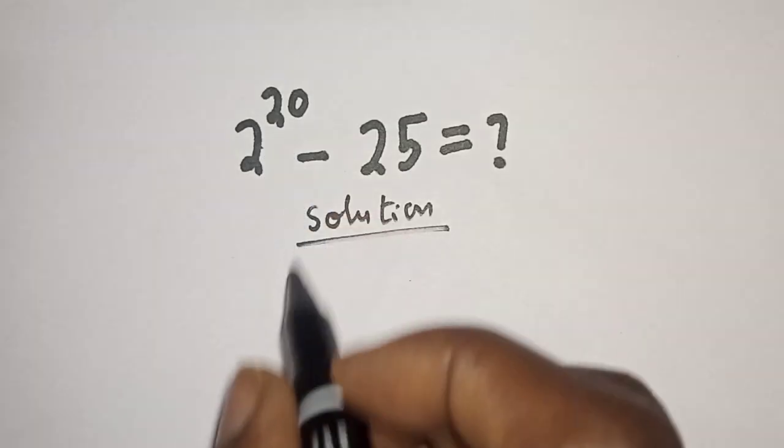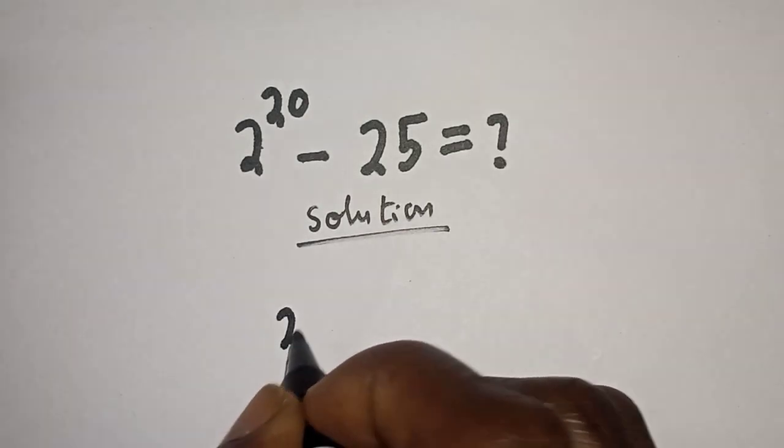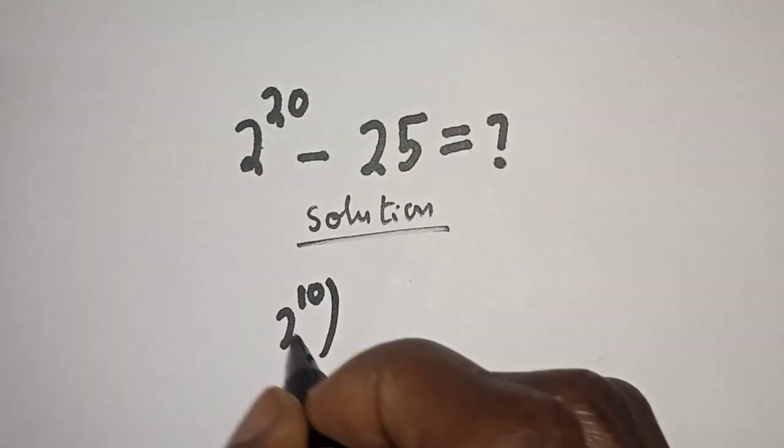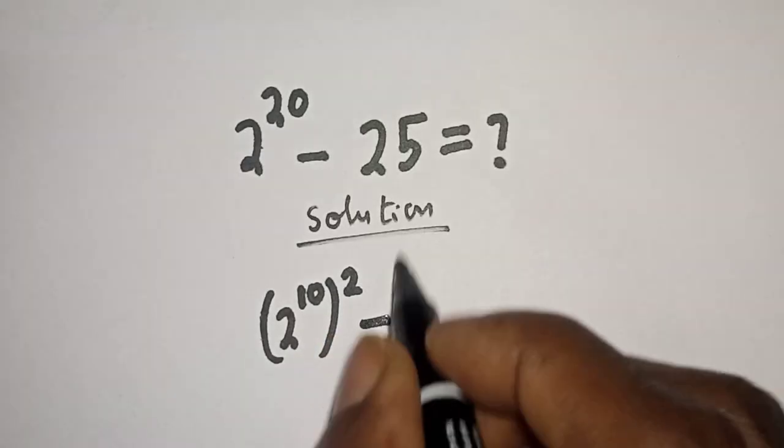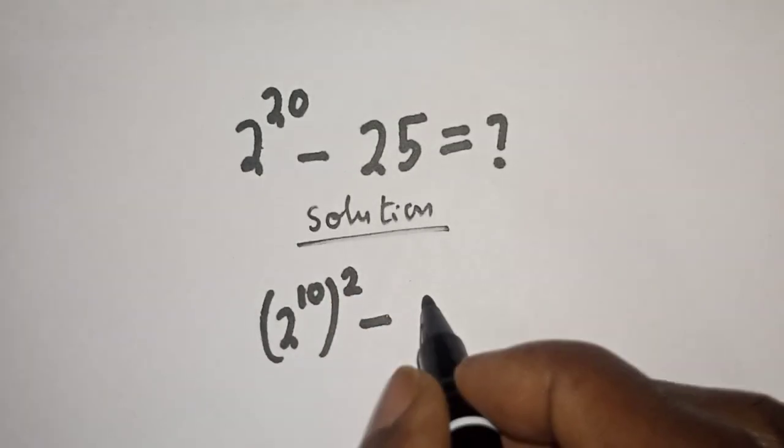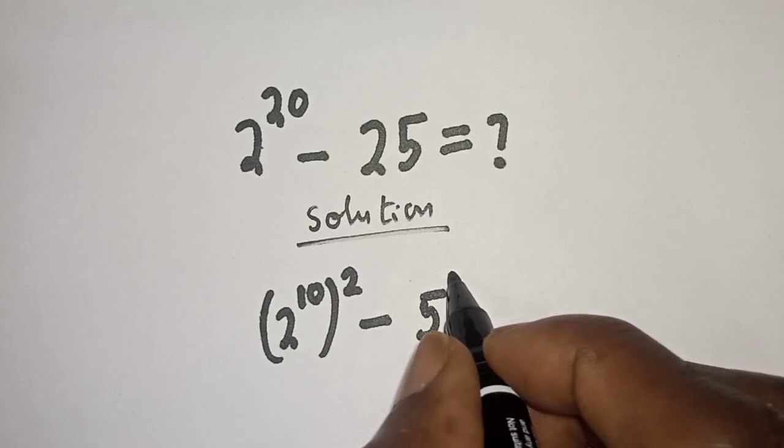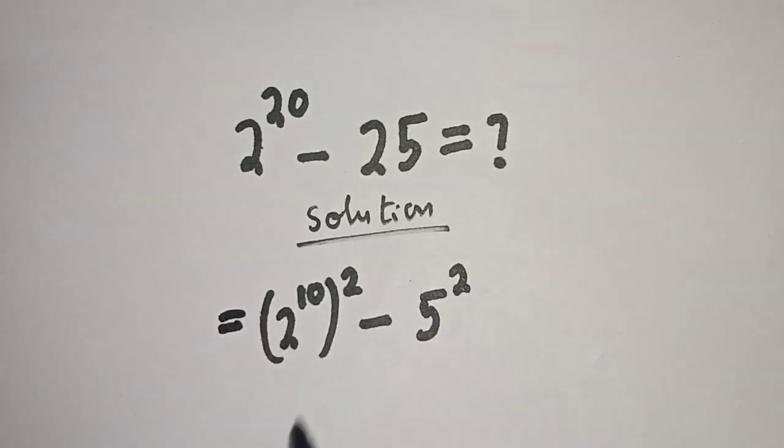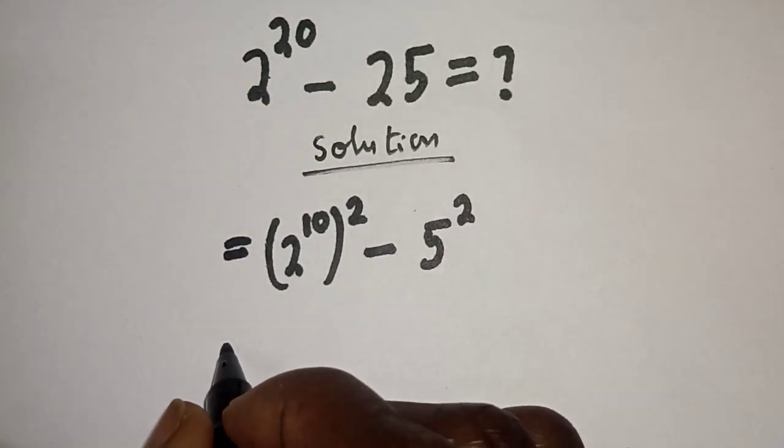2 raised to power 20 can be written as 2 raised to power 10 raised to power 2, minus 25 can be written as 5 square.